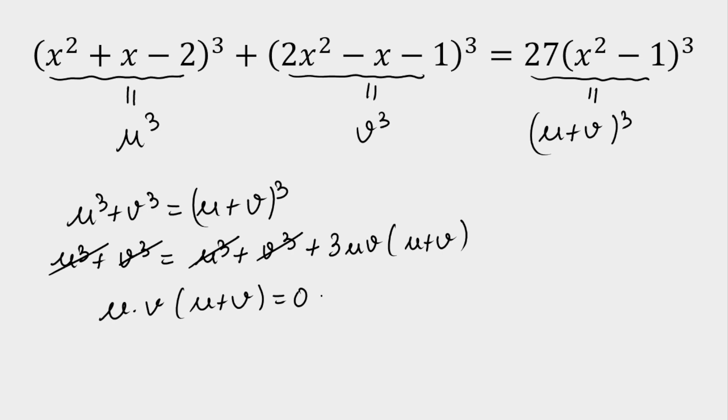From here, I'm getting three types of solutions: either u = 0, or v = 0, or u + v = 0. In the end, I'm going to calculate the values of x from first, second, and third, then take the union of all three. So let's start.